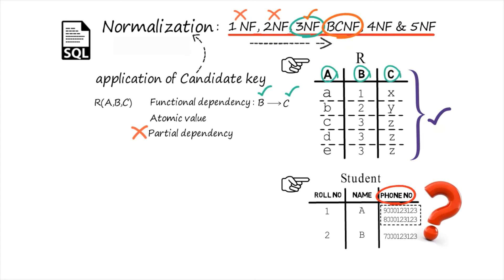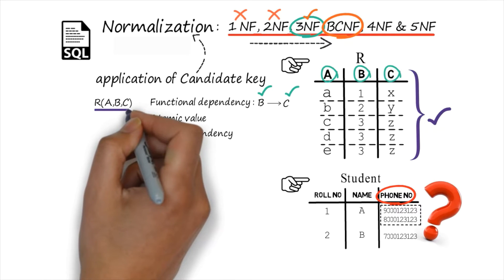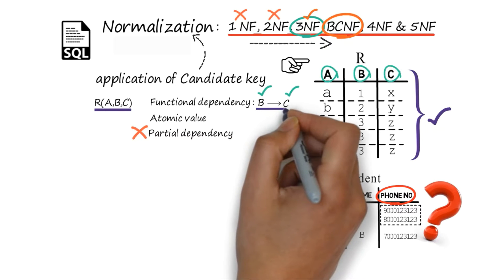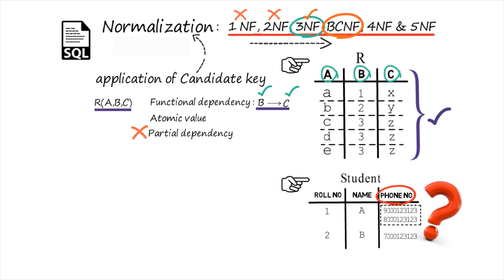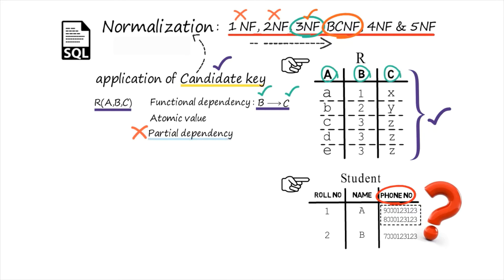This table can be represented as R with three attributes and one functional dependency. To find partial dependency, as I stated, today we are talking about application of candidate key — you will understand how important candidate key is in finding partial dependency. Before learning partial dependency, the only thing we have to find out is the candidate key. We are learning second normal form, and for finding 2NF we need partial dependency, and for partial dependency we need candidate key.